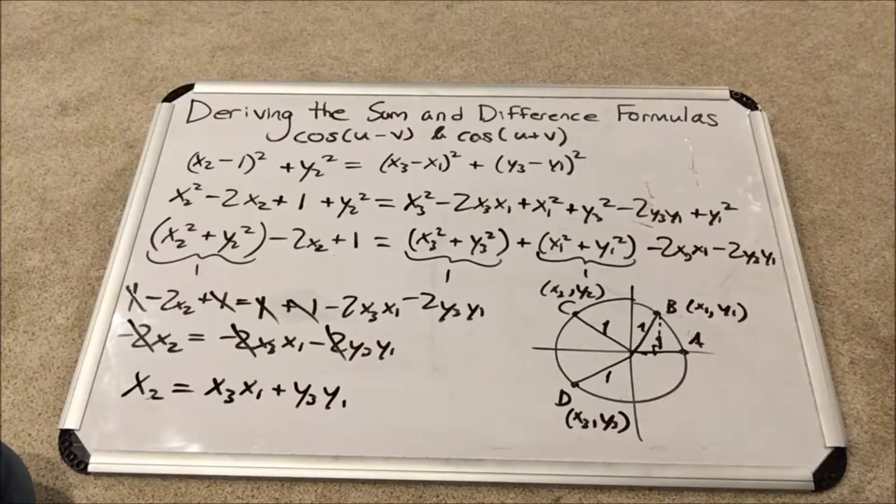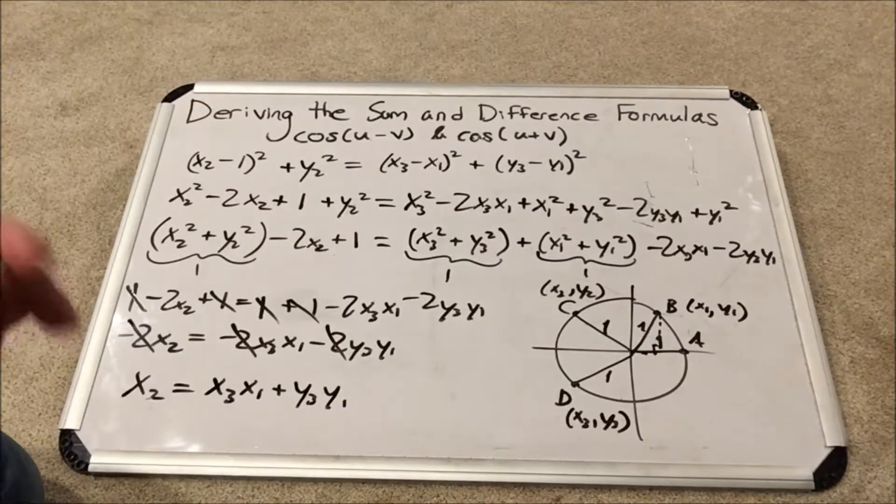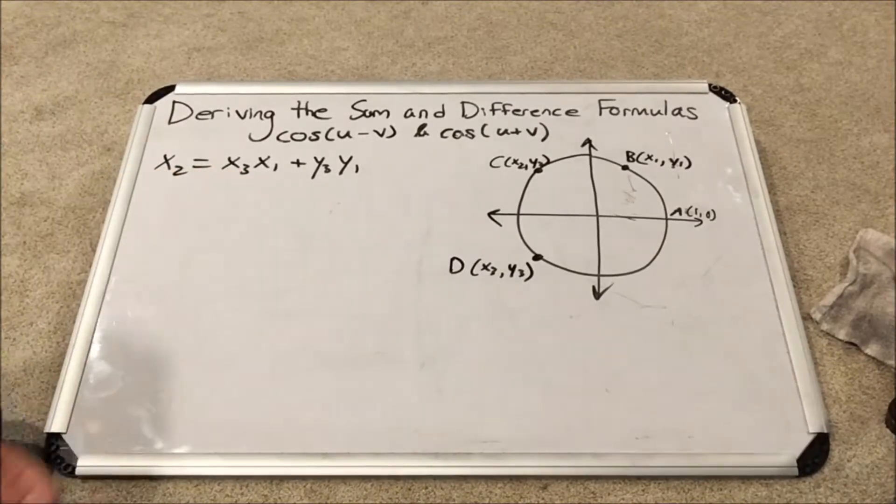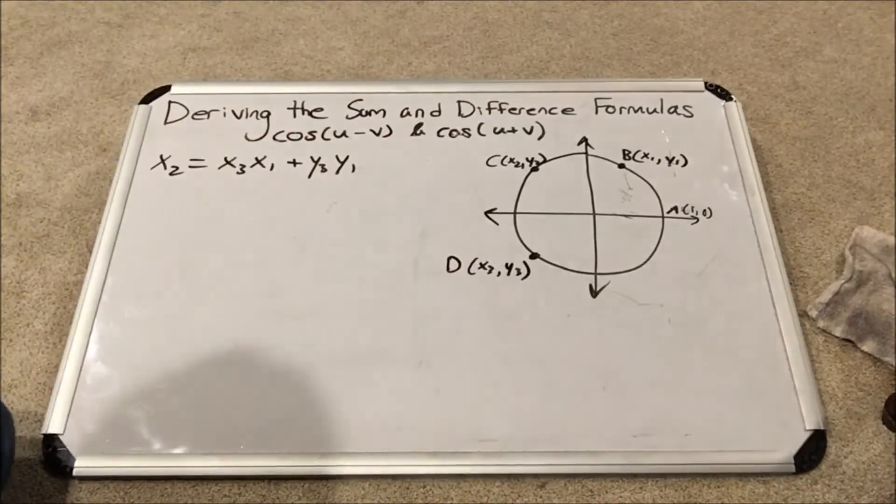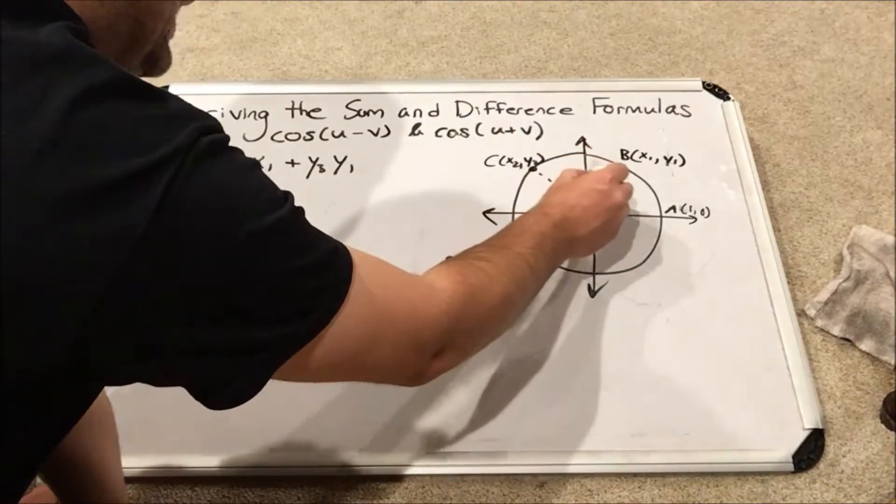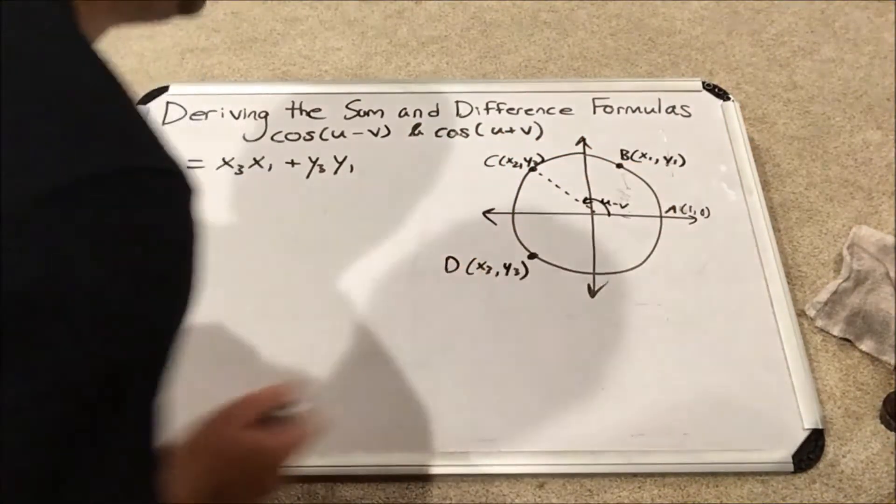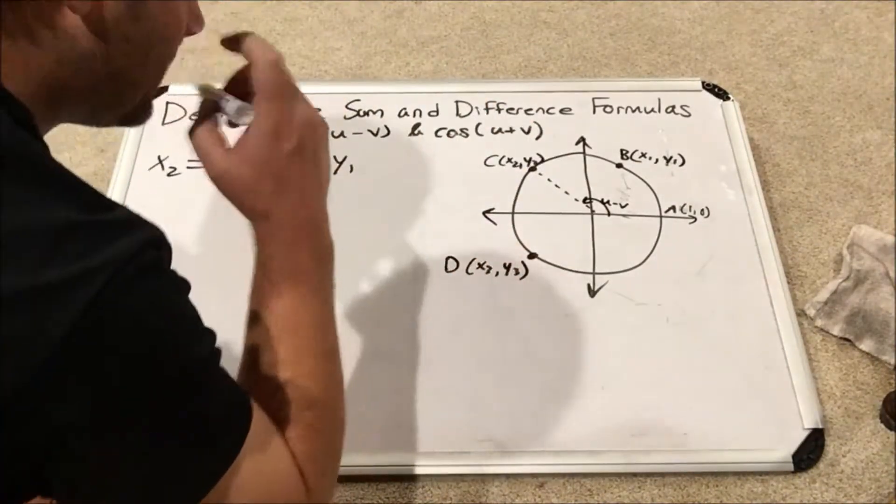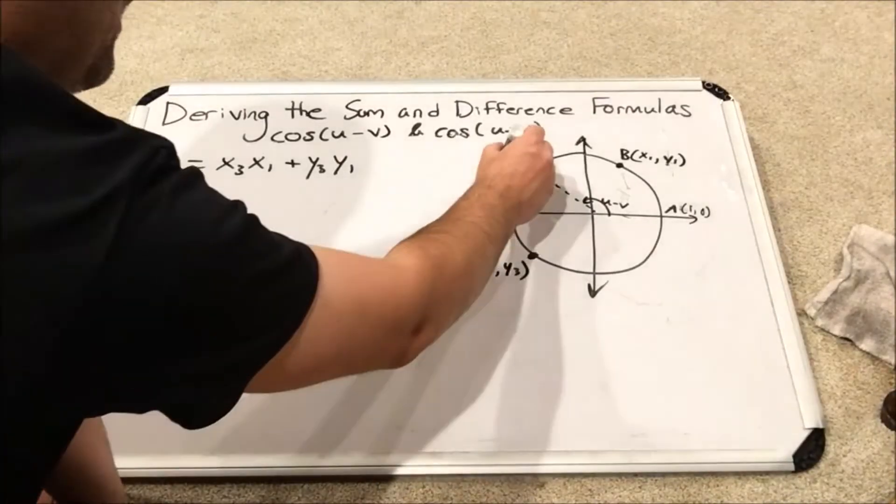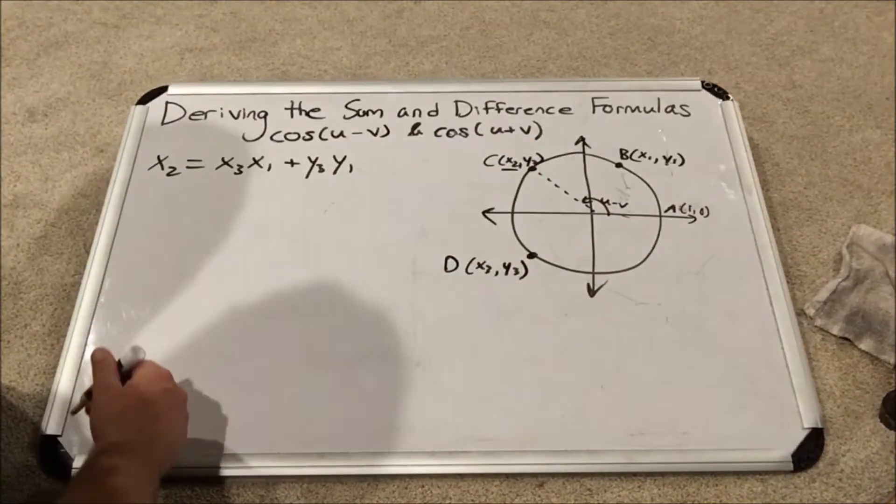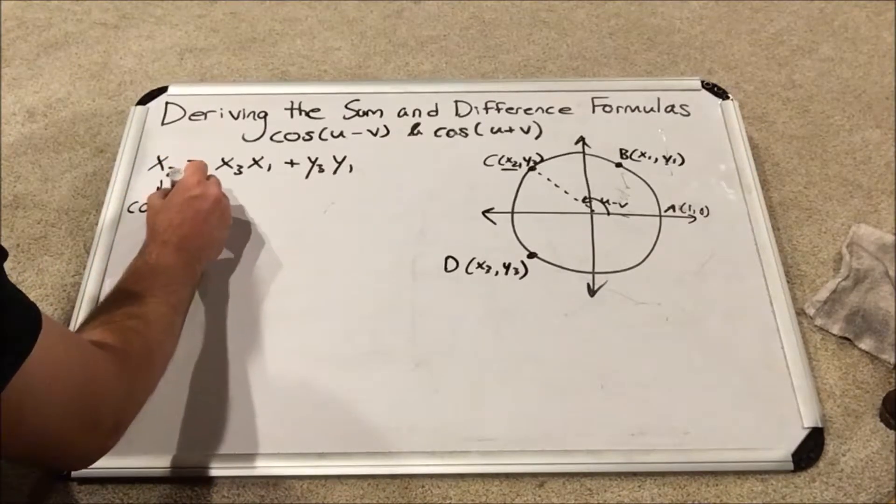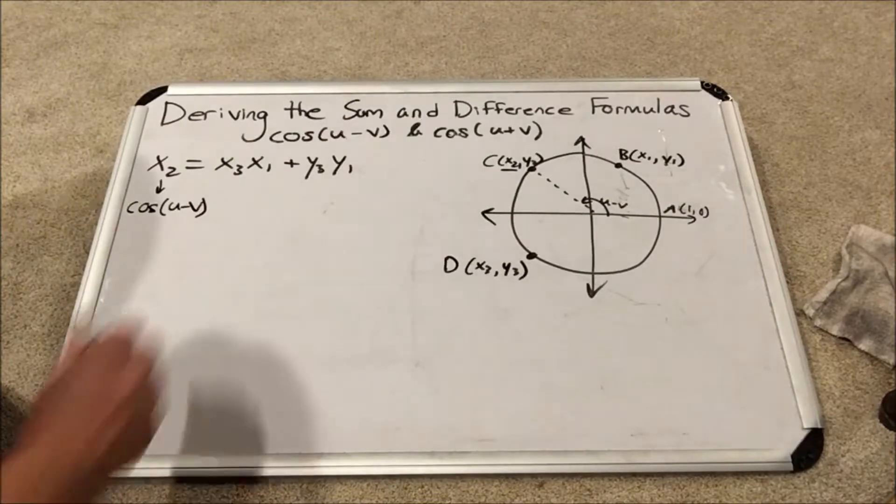Now I'm going to show you how this relates back to the cosine u minus v formula. All we have to do now to finish this is realize how these simple terms relate back to our unit circle. Specifically x2. We said that point C was an angle u minus v mapping. And so that means that the x value, if we remember how our sine and cosine values are defined on the unit circle, our x2 value is actually equal to the cosine of the angle that got us to that point. So x2 is actually equal to cosine u minus v. Aha! Now I think you see where I'm going with this.